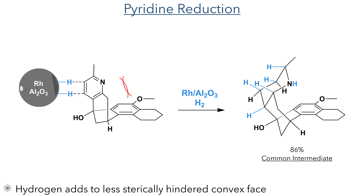This can be seen in the next reaction, which was a catalytic hydrogenation using a rhodium catalyst together with aluminium oxide. This was successful in selectively hydrogenating the convex side of the pyridine ring, as the concave side is inaccessible due to steric hindrance. Notably it was selective for the pyridine ring and did not reduce the aryl ether. The product of this reaction will be used as a common intermediate in the synthesis of hymgaline and also GB22 and GB13.